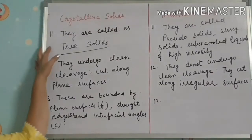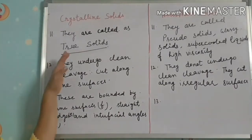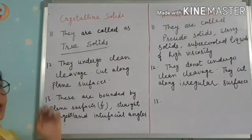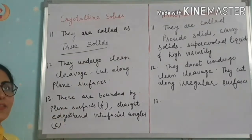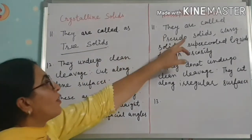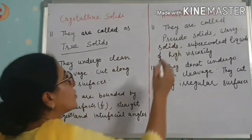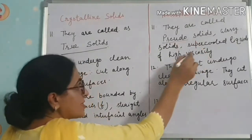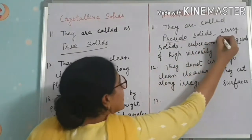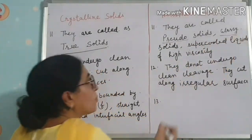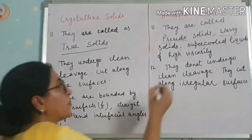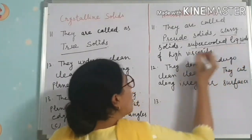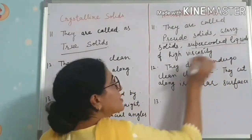The eleventh point: crystalline solids are called true solids, while amorphous solids are called pseudo solids, glossy solids, or super cooled liquids — specifically super cooled liquids of high viscosity.